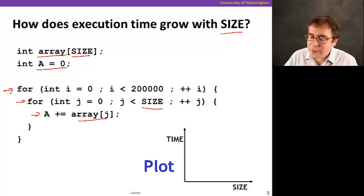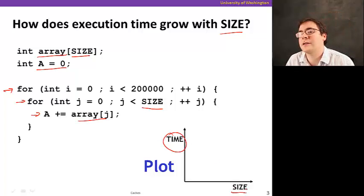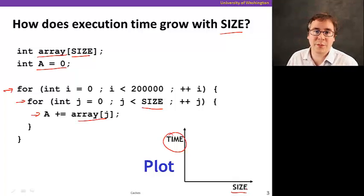So how do you expect the plot of execution time to be with respect to SIZE? Certainly it doesn't go down. It probably goes up because as the value of SIZE goes up, this program is going to take longer because the inner loop is going to be longer.